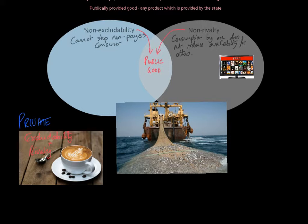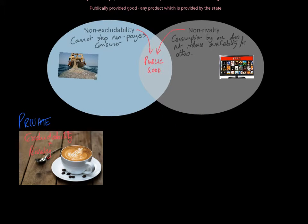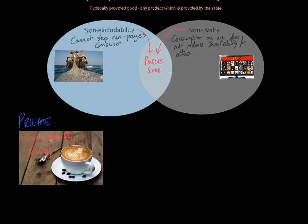Next, let's think about fishing. Is there any way to prevent non-payers from fishing? No — the seas, once you get out into international waters, are unrestricted, so non-payers cannot be prevented. Fishing has non-excludability. But there is rivalry: if a trawler catches fish, those fish are no longer available to be caught by any other trawler. So fishing has non-excludability but does have rivalry.